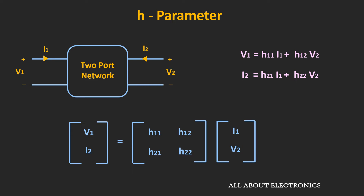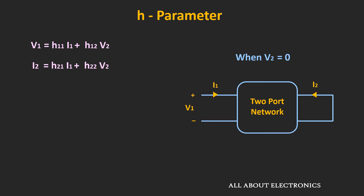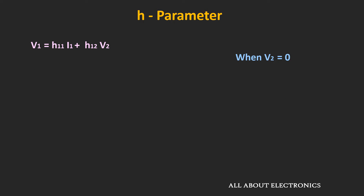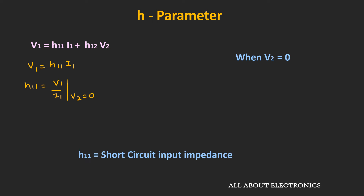Now let's see how we can find the individual H parameters. To find h11 and h21, let's make voltage v2 equal to 0 — in other words, let's short-circuit port 2. In this condition, the first expression becomes v1 equals h11 times i1, so h11 equals v1 divided by i1. This parameter has a unit of impedance and since port 2 is short-circuited, it is known as the short-circuit input impedance.